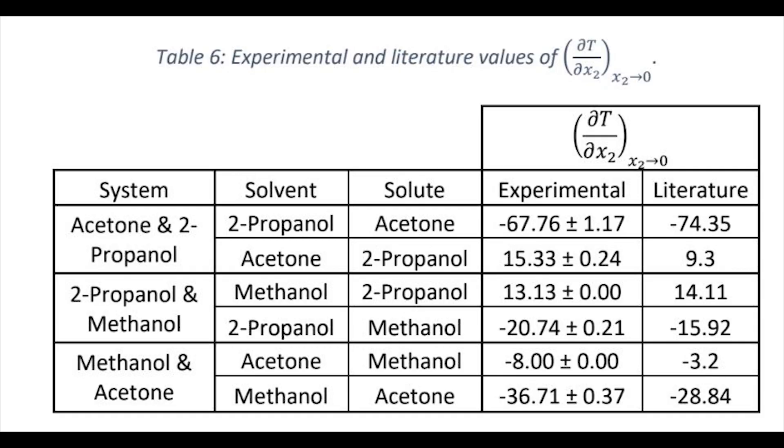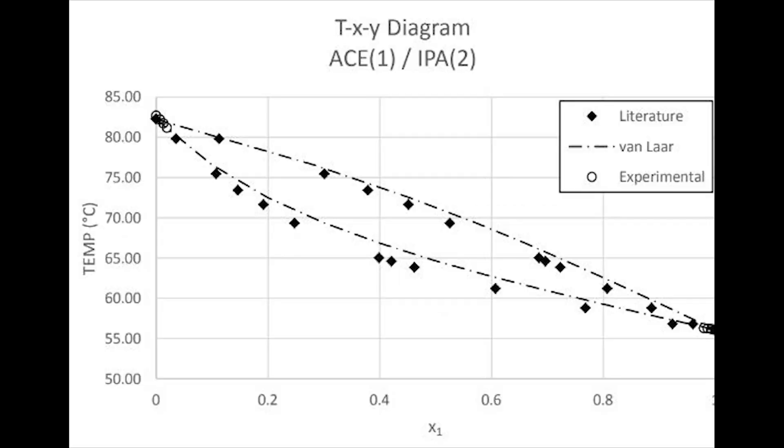By knowing this, we can now calculate the infinite dilution activity coefficient. Now that we have the activity coefficient, solve for Van Laar and NRTL interaction parameters. Once these parameters are known, these models can be used to compute the activity coefficients for a known liquid composition x1 and x2. Now that we have most of the terms for the original fugacity equation, we can determine vapor composition and temperature by a simple bubble point calculation.